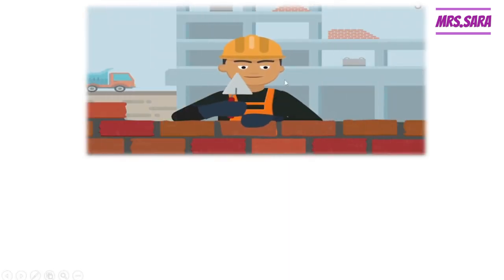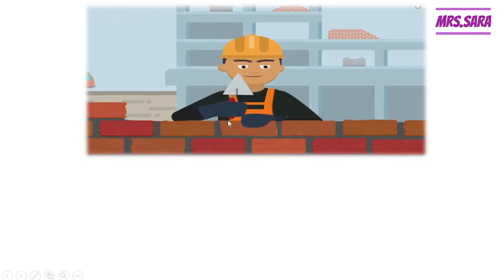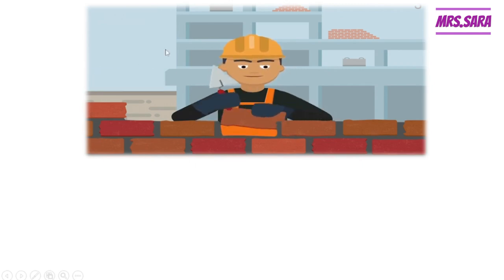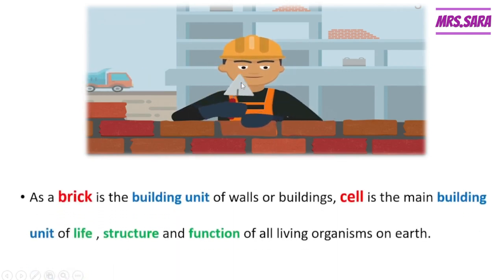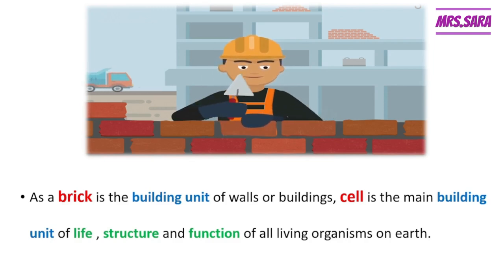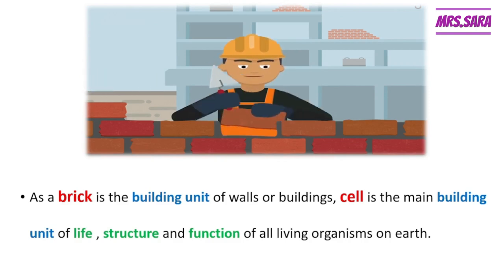As you can see here, Primary 6, this is a builder that uses bricks. This and this and this are bricks to make a wall, and walls make buildings. So, as a brick is the main building unit of walls or buildings, the cell is the main building unit of life — the structure and function of all living organisms on the earth.